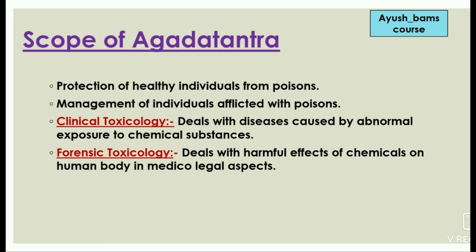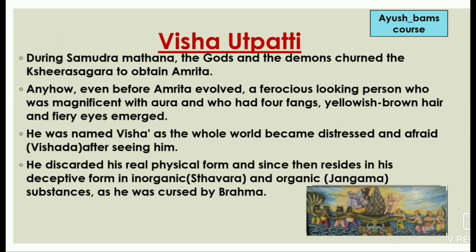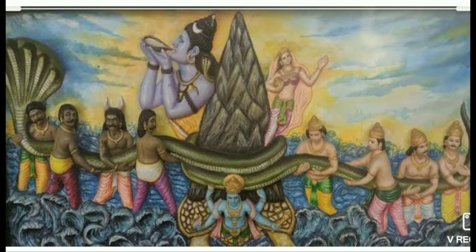Now we will see the scope of Agadha Tantra. It includes the protection of healthy individuals from poisons, management of individuals afflicted by poisons, and clinical toxicology — meaning it deals with diseases caused by abnormal exposure to chemical substances. It also deals with forensic toxicology, meaning dealing with harmful effects of chemicals on the human body in medico-legal aspects.